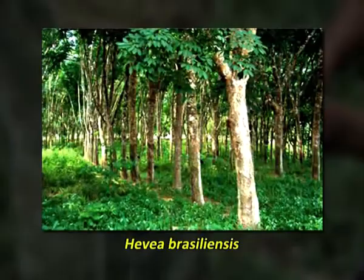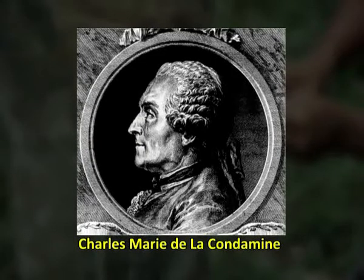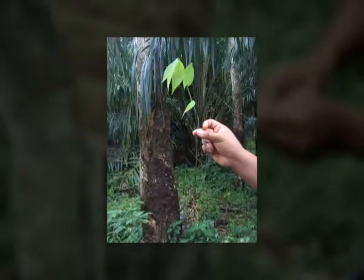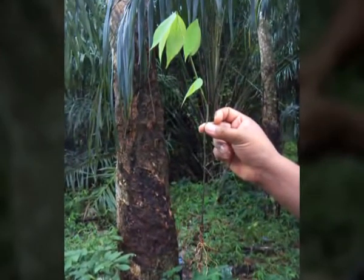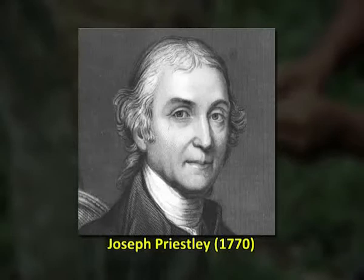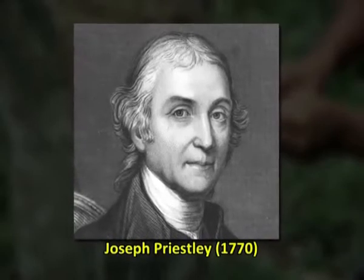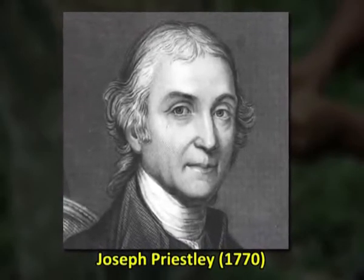Hevea brasiliensis initially grew in South America. Charles Marie de la Condamine is credited with introducing samples of this species to the Académie Royale des Sciences of France in 1736. In 1751, he presented a paper describing many properties of rubber, eventually published in 1755, referred to as the first scientific paper on rubber. In 1770, Englishman Joseph Priestley observed that a piece of the material was extremely good for rubbing off pencil marks on paper, hence introducing the name 'rubber.'